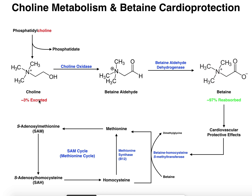About three percent of choline is excreted. The body holds on to choline because it views it as pretty valuable. Choline is going to be metabolized into a molecule called betaine aldehyde — sometimes called glycine betaine aldehyde, because it's a derivative of glycine. This is catalyzed by the enzyme choline oxidase, which converts the alcohol group into an aldehyde, taking it up one oxidation state.